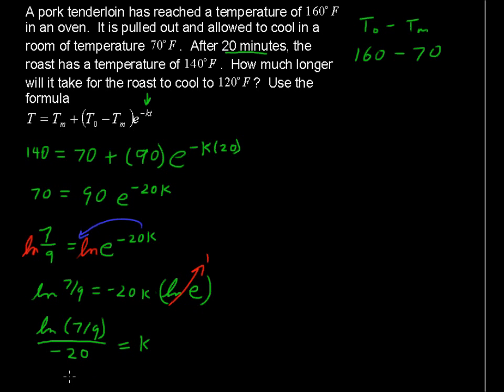Plugging all of this in gives us K equals 0.012566. It goes on farther, but that's holding on to enough decimal places for now.